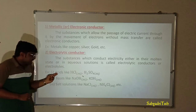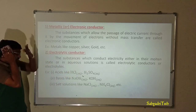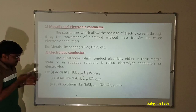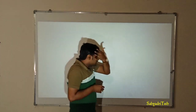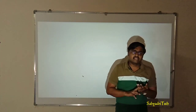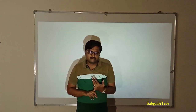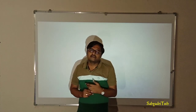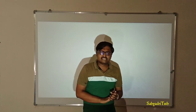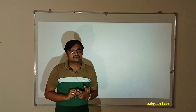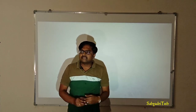Electrolytic conductors may be acids, bases, or salts. Commonly used acids include hydrochloric acid and sulfuric acid; bases include sodium hydroxide and potassium hydroxide; and salts such as sodium chloride and ammonium chloride. To summarize: metallic conductors allow the passage of electric current by movement of electrons without mass transfer, with metals as examples. Electrolytic conductors conduct electricity either in their molten state or aqueous solution — examples are acids, bases, and salts.